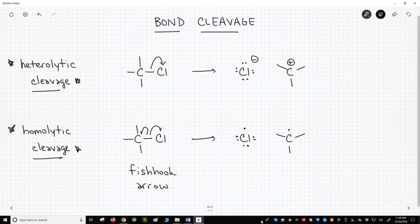Homolytic cleavages are associated with radical reactions. Heterolytic cleavages are associated with ionic reactions. As we continue with radical reactions in this playlist, we will perform a lot of homolytic cleavages and use fish hook arrows to move the electrons. Remember that fish hook arrows are just for moving single electrons.